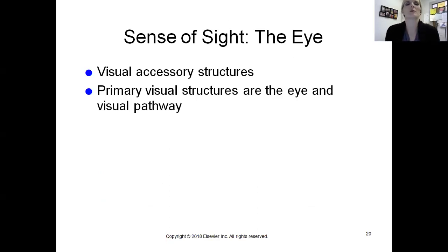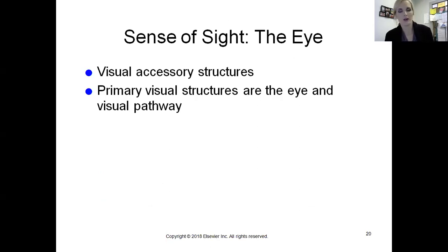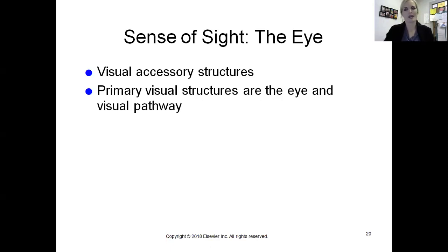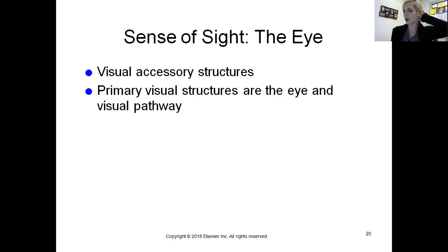Starting with the eye, we have some visual accessory structures. When I look at the eye in a mirror, I can see the eye itself but also everything around it like the eyelid, eyelashes, and eyebrow - those are the accessory structures. We'll then focus on the eyeball itself and the visual pathway the optic nerve takes all the way back to the occipital lobe of our cerebrum.